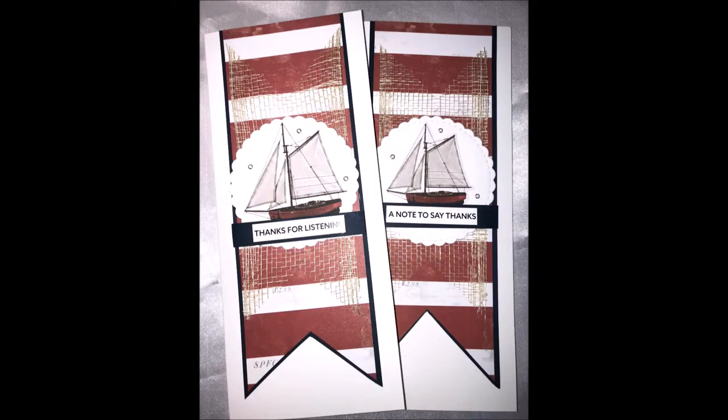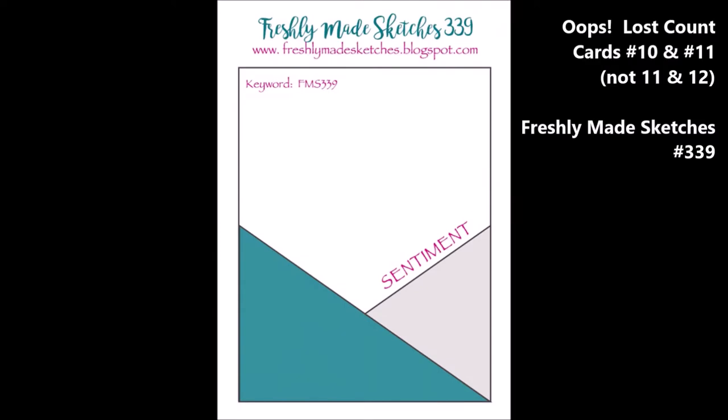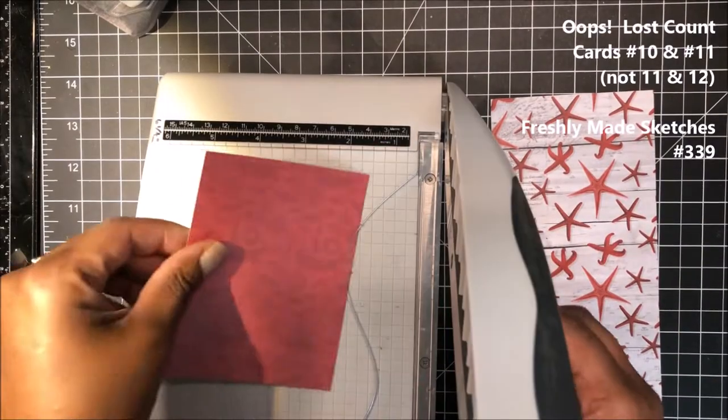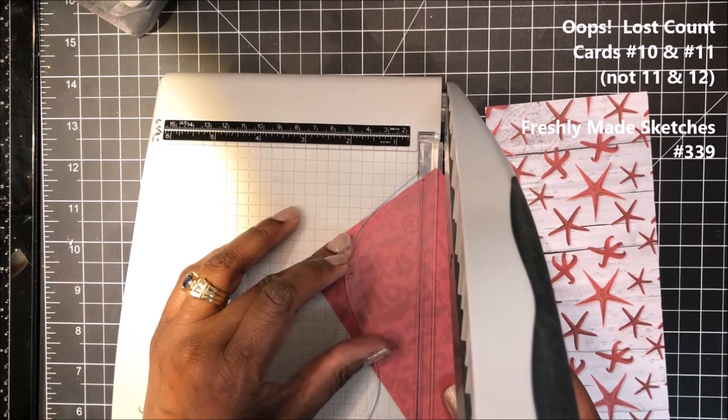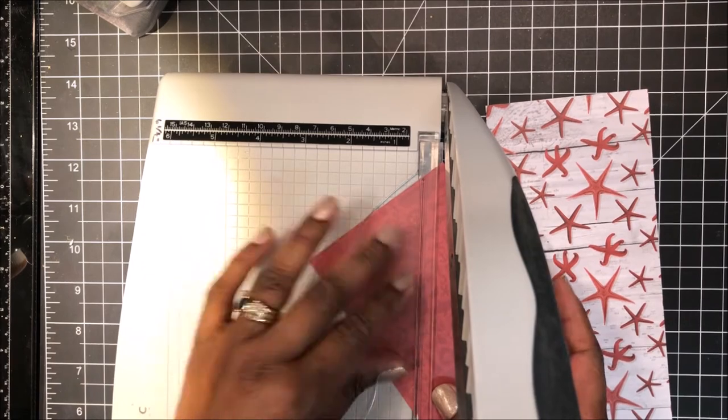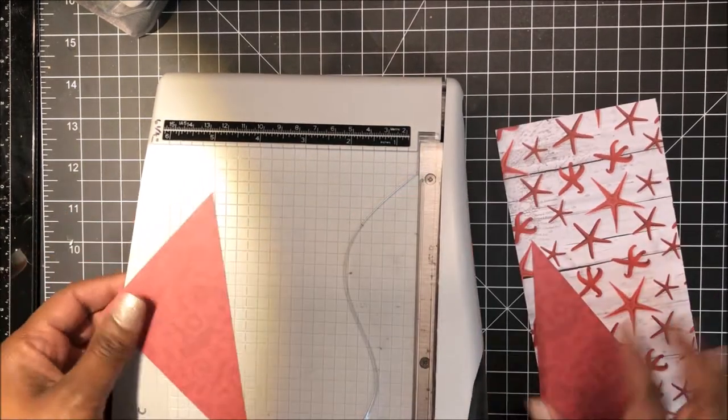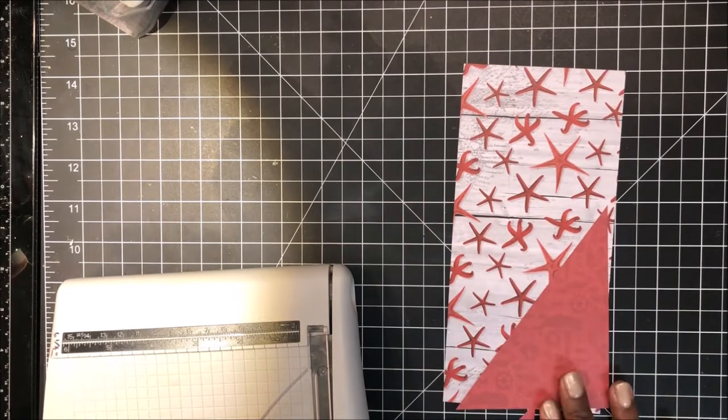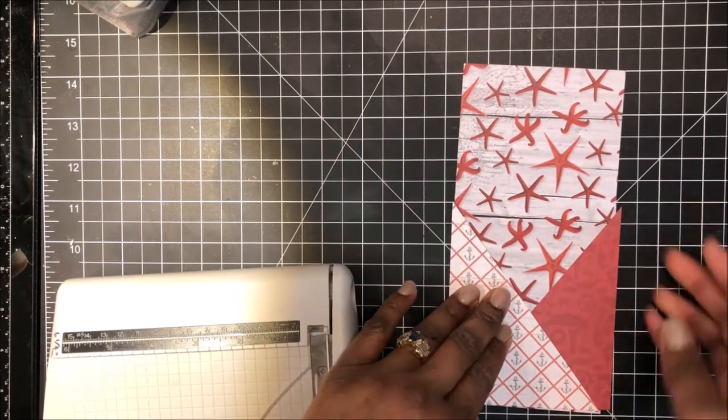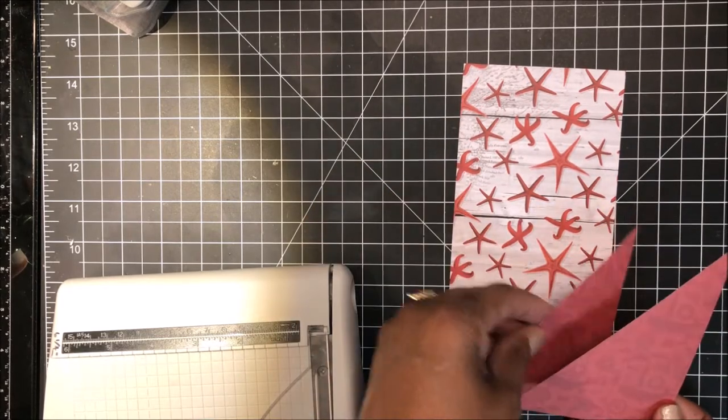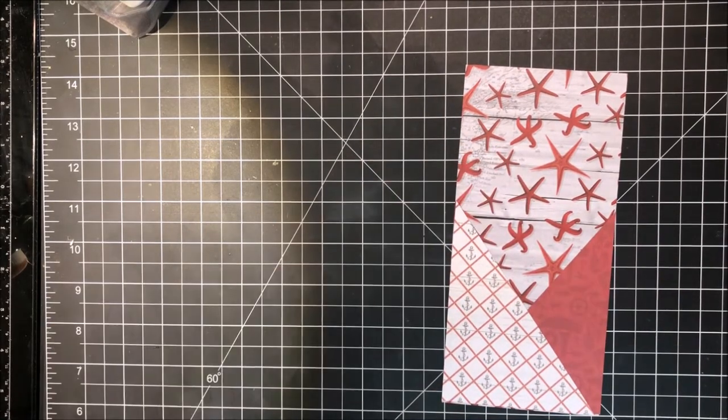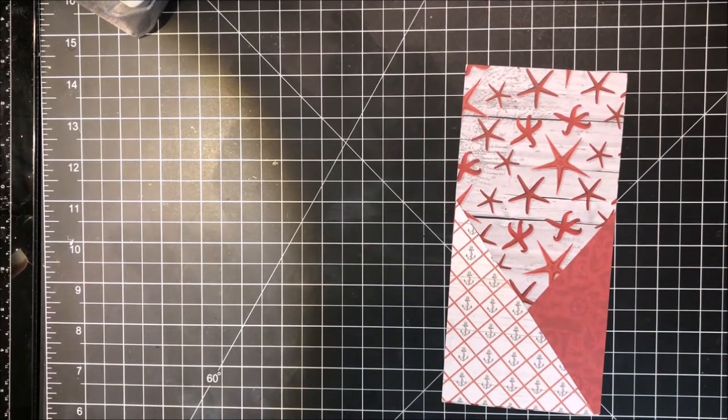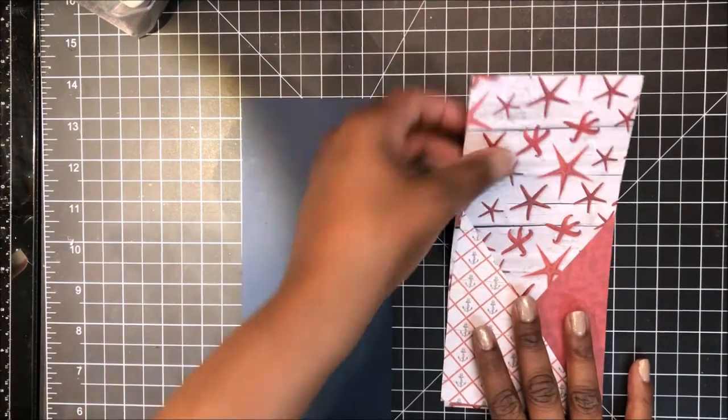For my fifth design cards, 11 and 12, I'm using freshly made sketches number 339 and I'm adapting it to slimline size. And here I have cut a large pattern paper piece to three and five eighths by eight, and then a small pattern paper piece to three and five eighths by four and three fourths. And then I have cut that four and three fourth piece on the diagonal so that I have two halves or two separate triangles.